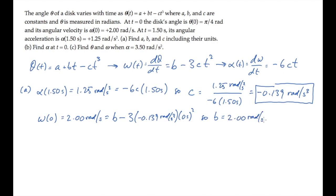Doing a similar thing with the expression for the angular position, at time t equals zero, the value is pi over four, and that equals a plus b times t minus ct cubed. So we see that a must be pi over four radians.